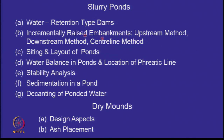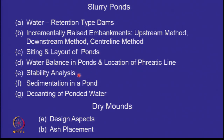When you incrementally raise embankments, they can be by the upstream method, downstream method, or the centerline method. We will look at the layout of these ponds, the water balance — the most important thing being how much water is in an ash pond or tailings pond — because higher water means a higher phreatic line, which affects the stability of the embankments. We will also look at how sedimentation occurs, how we decide the size of a pond, and how we remove water after solids have settled. Briefly, we will look at dry mounds as well.